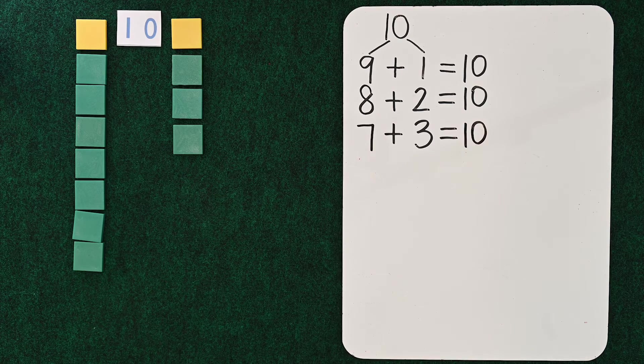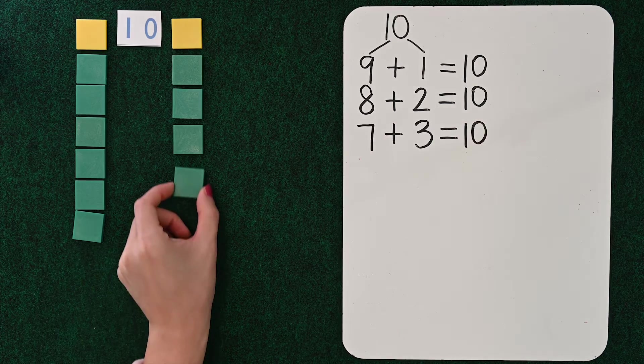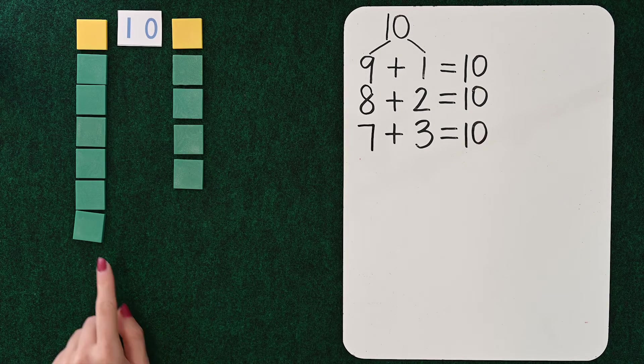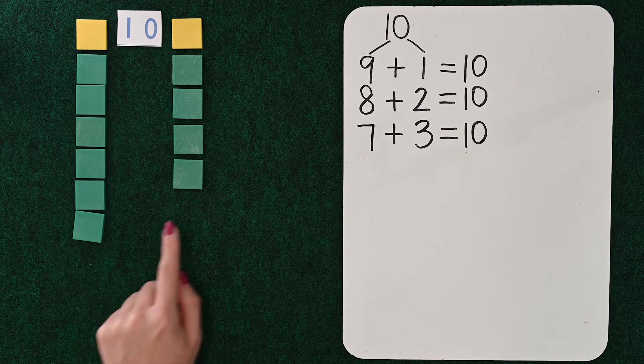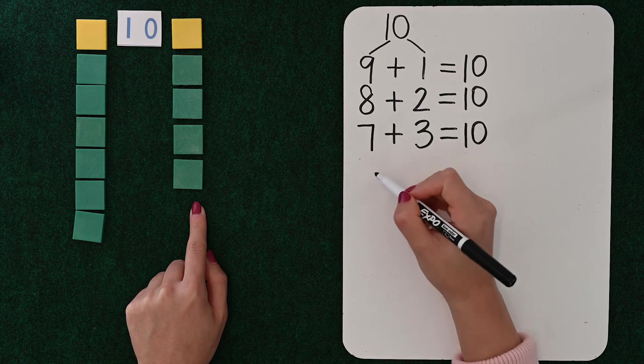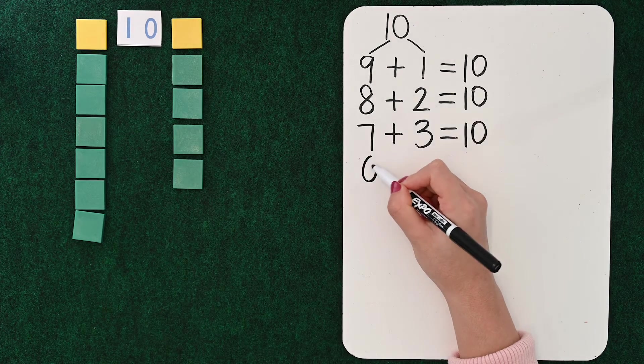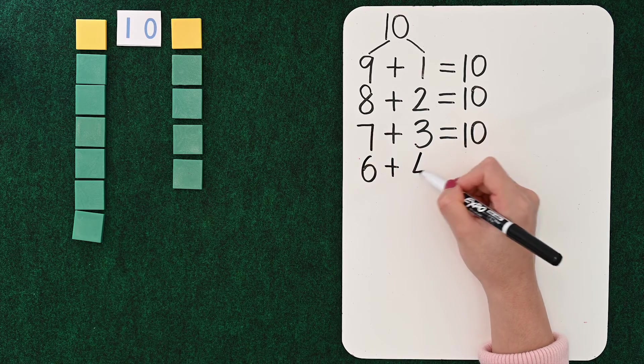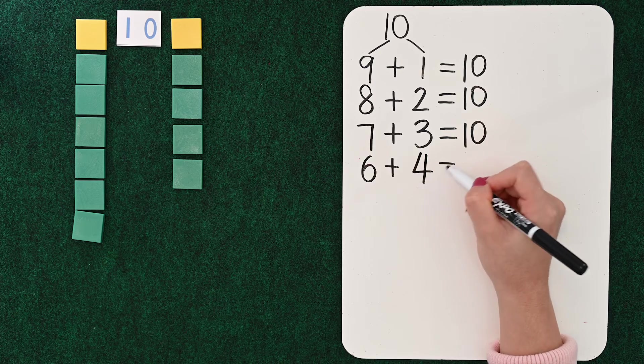Let's keep distributing those cookies. One more over to kid number two. And we have how many for kid one? 6 cookies and 4 cookies for kid two. So 6 plus 4 equals 10.